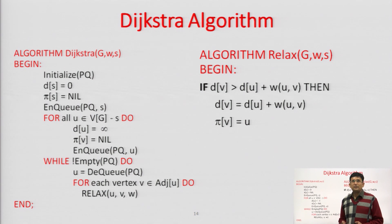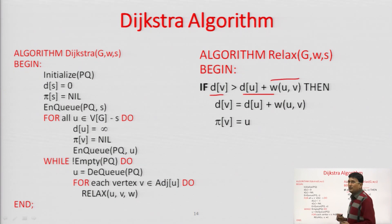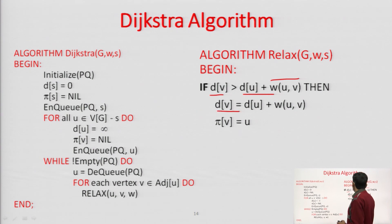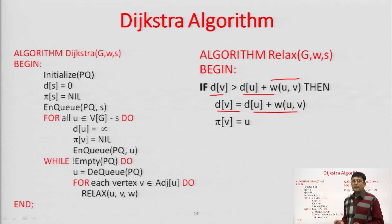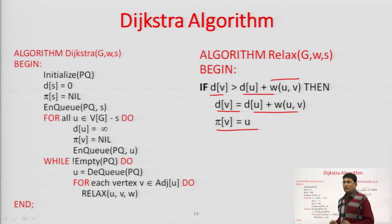Now let us look at the algorithm. This is the relaxation algorithm. If the distance of V is greater than the distance of U plus the edge cost w(u,v), then we update the distance of V. Since vertex V was updated through vertex U, we set its predecessor to U.